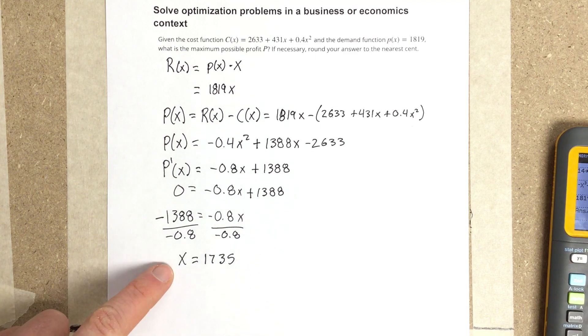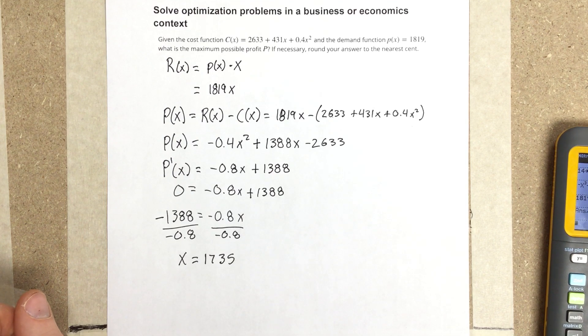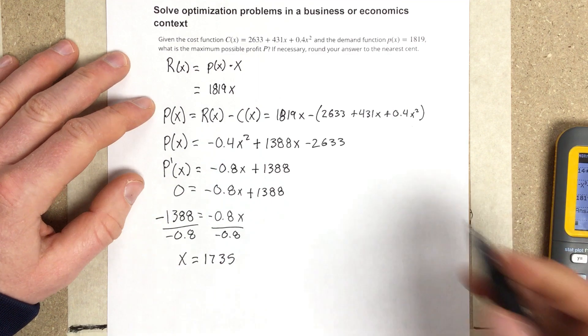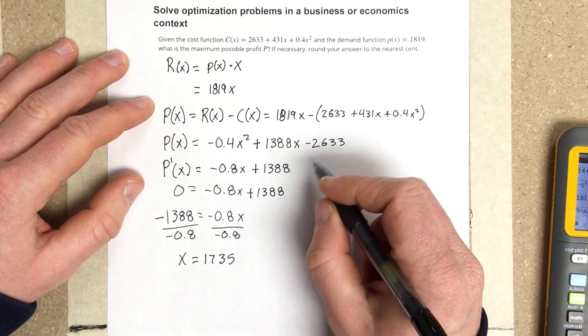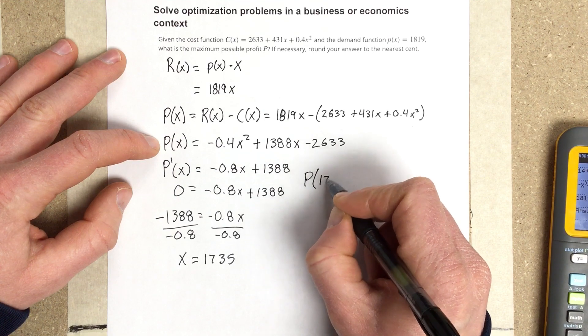Now to find the maximum profit, we need to test this value of 1,735 and see what the maximum profit would be. So we're going to evaluate P(1735).